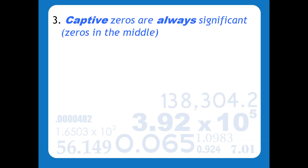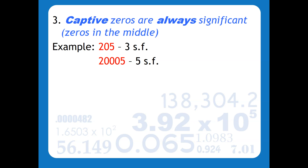Captive zeros are always significant. Captive — think of zeros in between non-zero numbers, they're always in the middle. So in this case 205, every single one of those would be significant, or 20,005 — every single one of those would be significant.